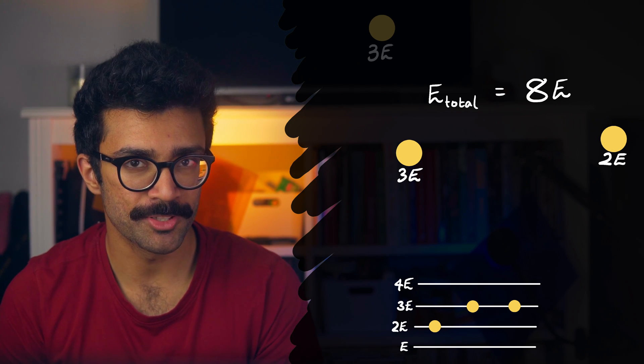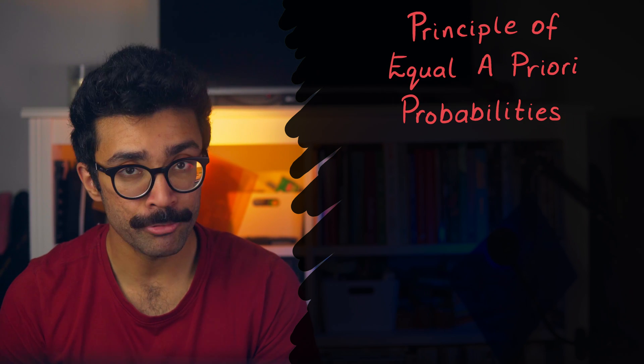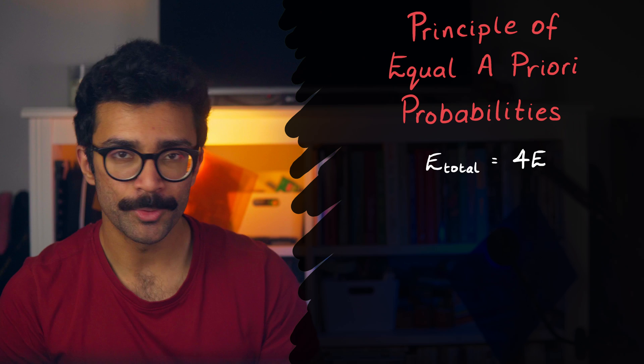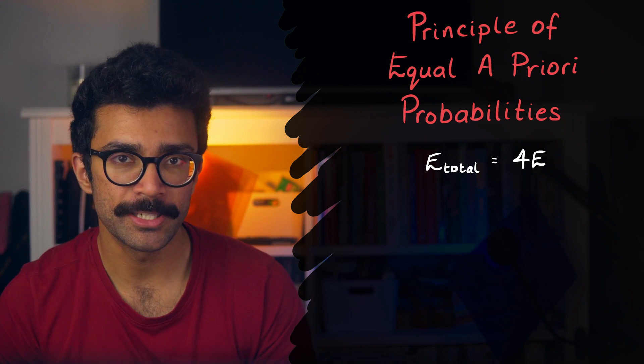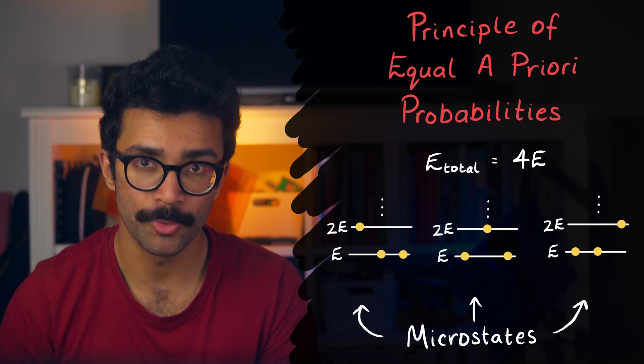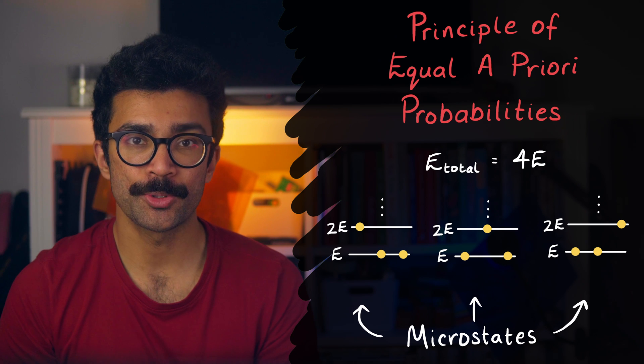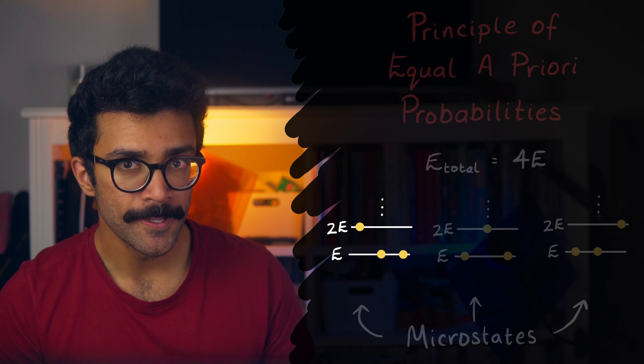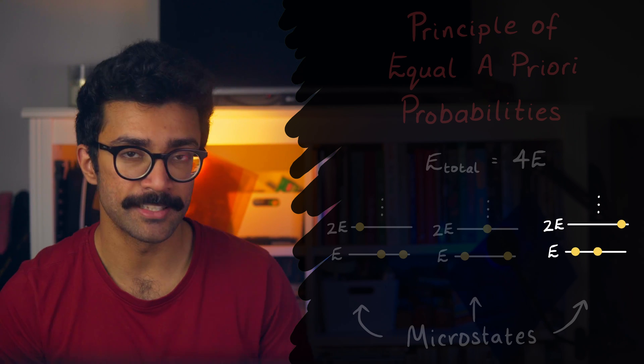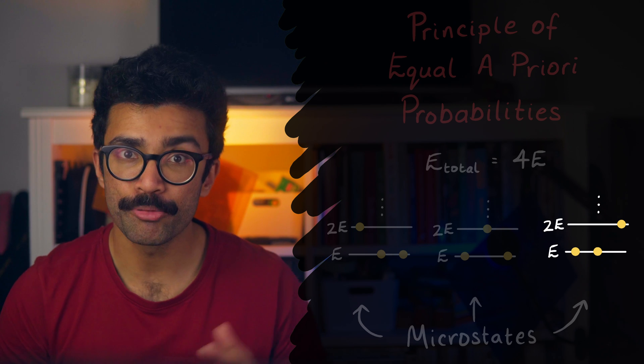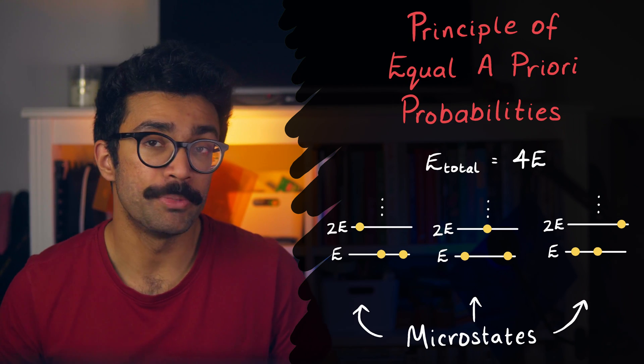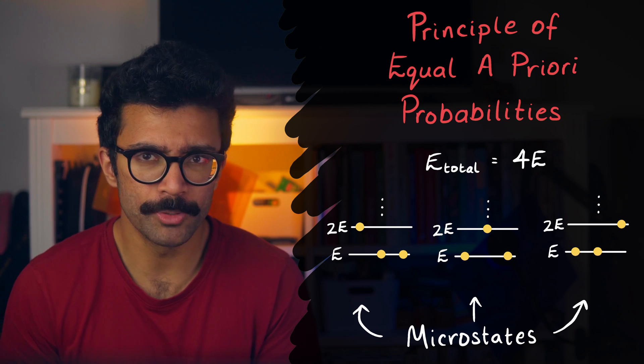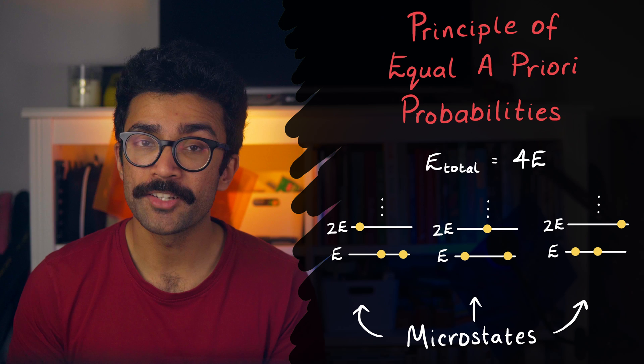And here we come to one of the basic assumptions of statistical mechanics. It's known as the principle of equal a priori probabilities. Complicated name, but basically, it just says that for a given total energy of the system, with all other things being equal, the system is equally likely to be found in any of these possible microstates, or any possible microstates for that matter. For example, if the system has a total energy of 4E, then it's equally likely that particle A is in the 2E state, and the others are in E state, as it is that B is in 2E, as it is that particle C is in 2E. Basically if all the particles are the same as each other, then there is no preference for which particle is in the 2E state. It could be any of them, and it's equally likely that any of them are in the 2E state. Put this way, our statement seems kind of obvious.